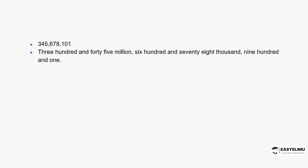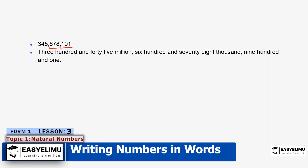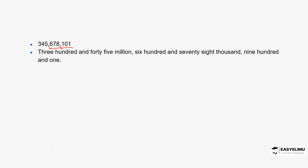You can see the number on screen: 345,678,101. The same thing — you group the digits in groups of three: the first three, the second group of three, and what remains is another group of three. Three hundred and forty-five million, because of the six digits after it; six hundred and seventy-eight thousand; and one hundred and one, as you can see on the screen.